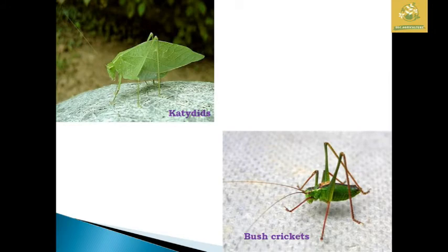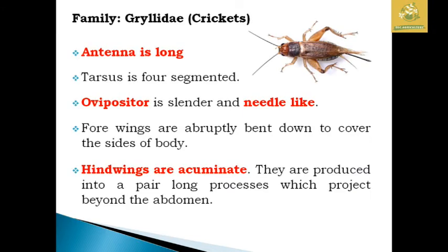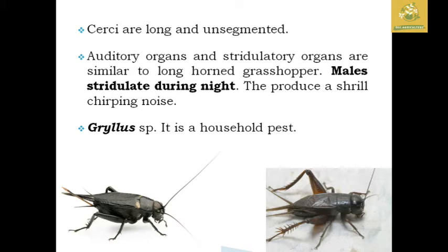The family Gryllidae is mainly comprised of crickets. The antennae are long, the tarsus is four-segmented, and the ovipositor is slender and needle-like. The forewings are bent down to cover both sides of the body, and the hind wings are produced into a pair of long processes projecting beyond the abdomen. The cerci are long and unsegmented. Stridulatory and auditory organs are similar to long-horned grasshoppers. Crickets produce a strident, creepy noise, especially at night. The house cricket species is a household pest.